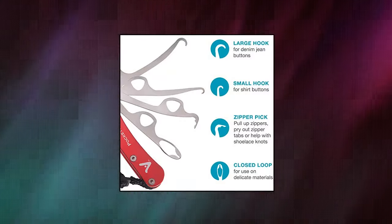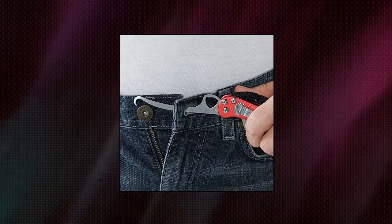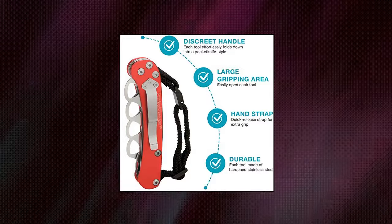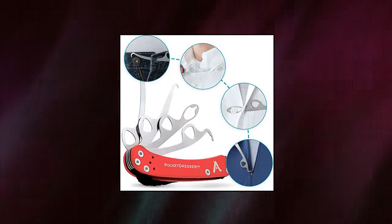Large hook for pants button assistance. Small hook for mid-size shirt button assistance. Zipper shoelace pick for pulling or prying out zippers and untying shoes or releasing knots. Closed loop for delicate materials with smaller buttons.